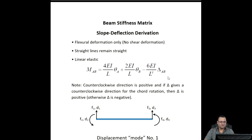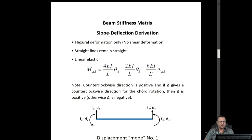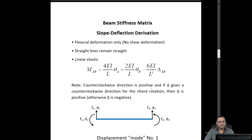We will assume that counter-clockwise direction is positive. So if MAB is a positive value, that means the direction is counter-clockwise. And if delta gives a counter-clockwise direction for the chord rotation, then delta is positive; otherwise, delta is negative.